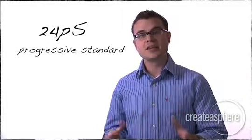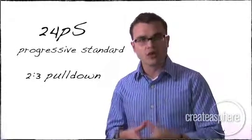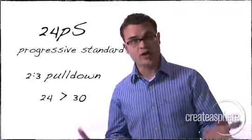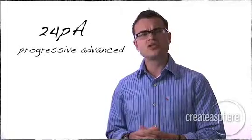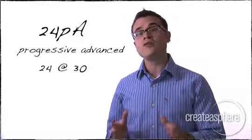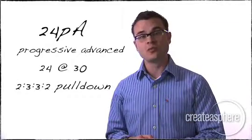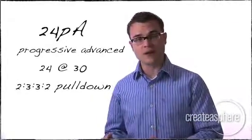24P standard is taking a traditional 2-3 pull down cadence that changes the version from 24 to 29.97. The last is the 24P advanced, which records a 24 frame signal at a 30 frame time base, and it uses an advanced version of the 3-2 pull down in order to record a 2-3-3-2 pull down.